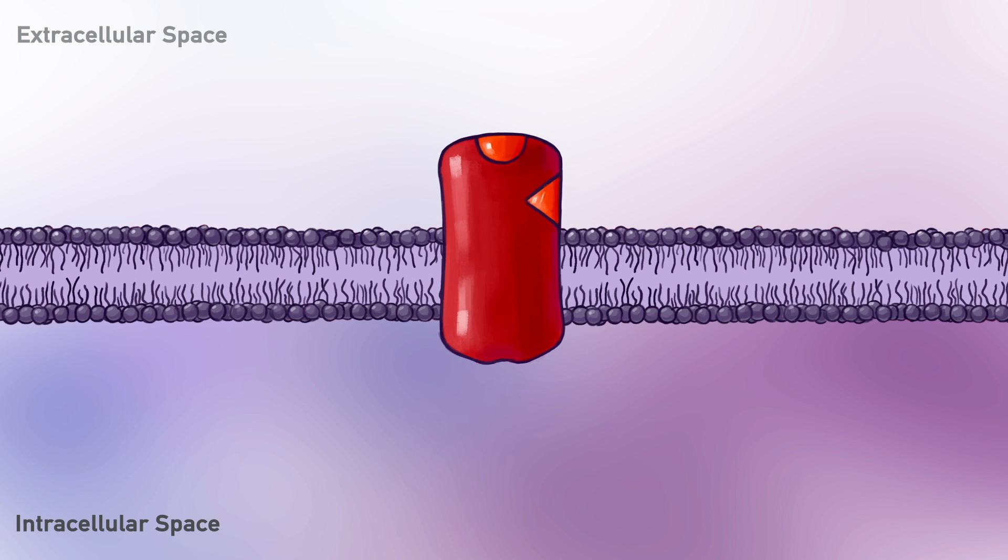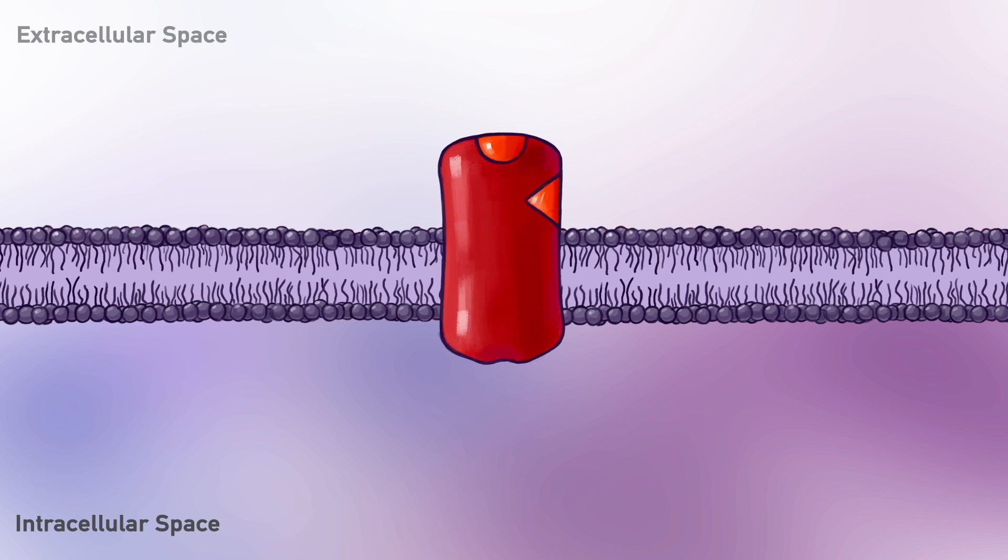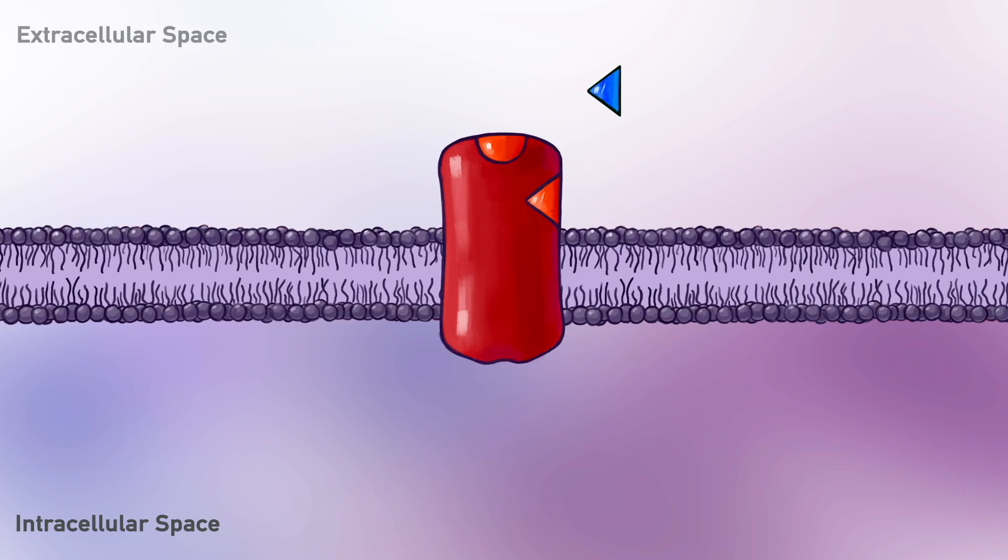Keep in mind, drugs are also able to bind with allosteric binding sites, and what is important, each receptor has a lot of allosteric binding sites. Ligand occupation of allosteric sites does not activate or inhibit receptor function but modifies or modulates the receptor response to its physiological ligand. These kinds of ligands are called allosteric modulators because they modulate receptor function.